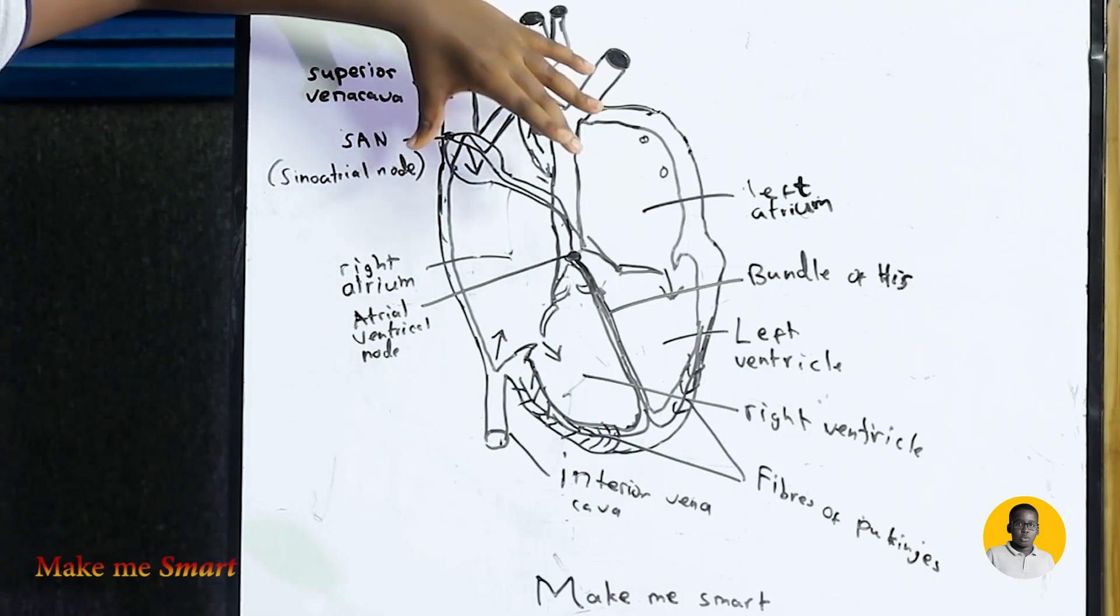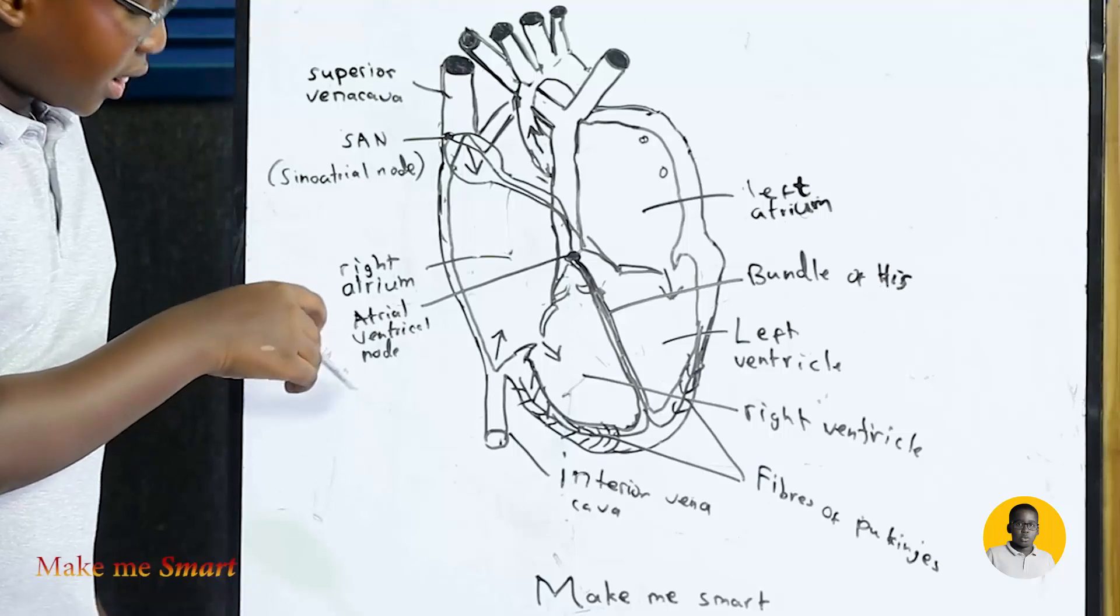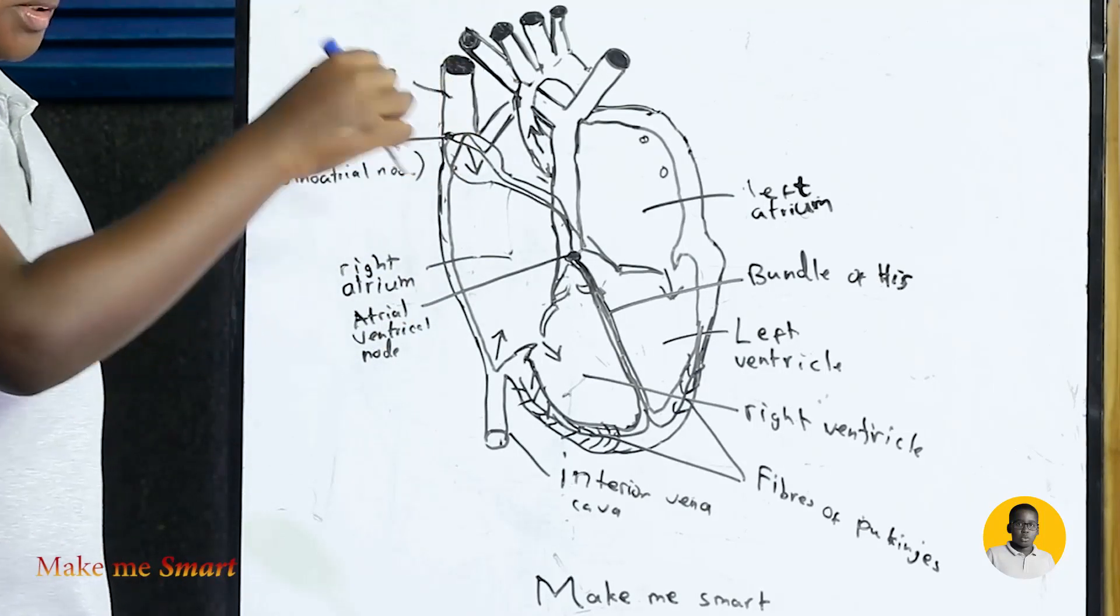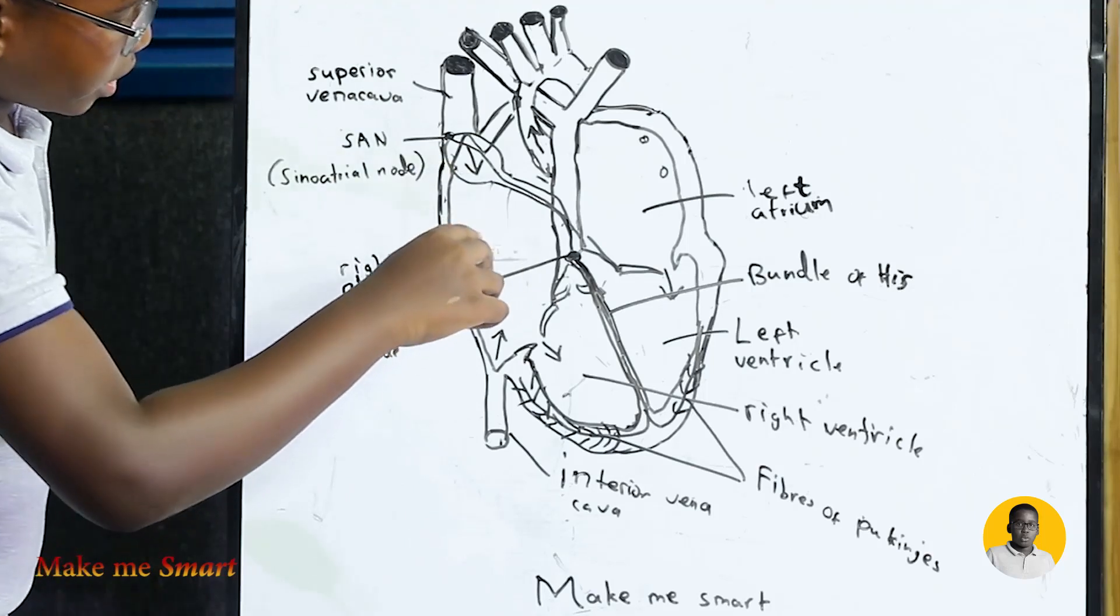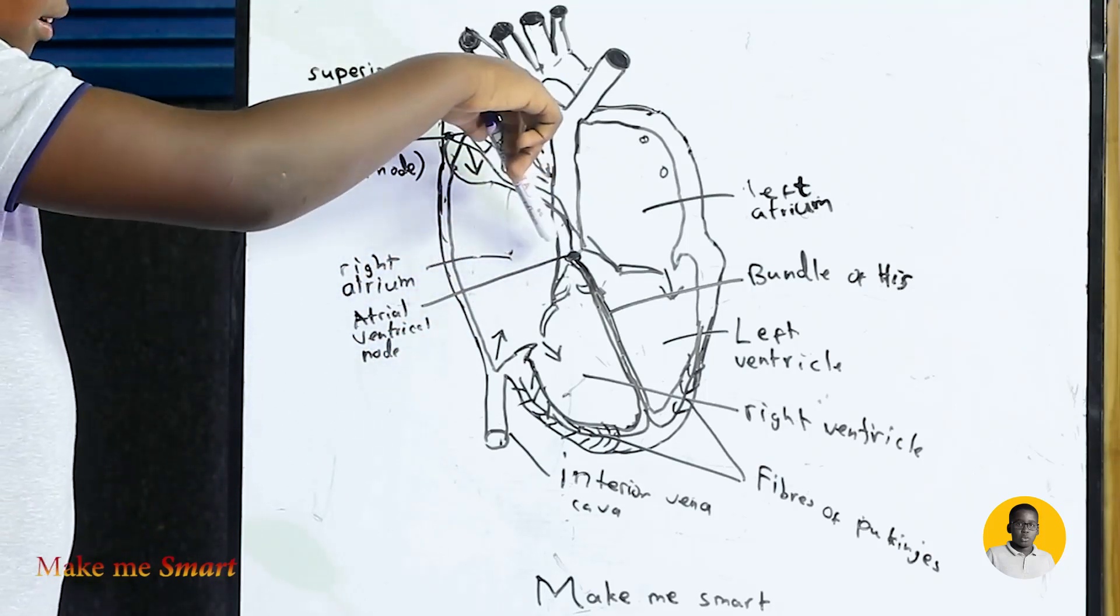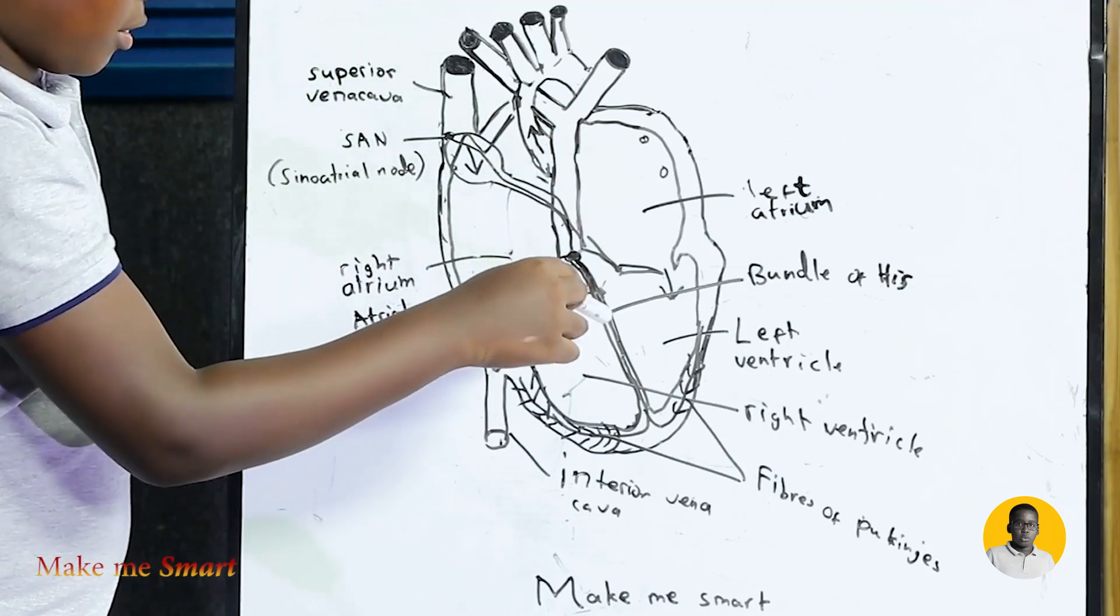They are received in the atrioventricular node. Then these upper chambers pump blood toward the lower chambers. Then this atrioventricular node pushes down through the bundle of His to the lower chambers.